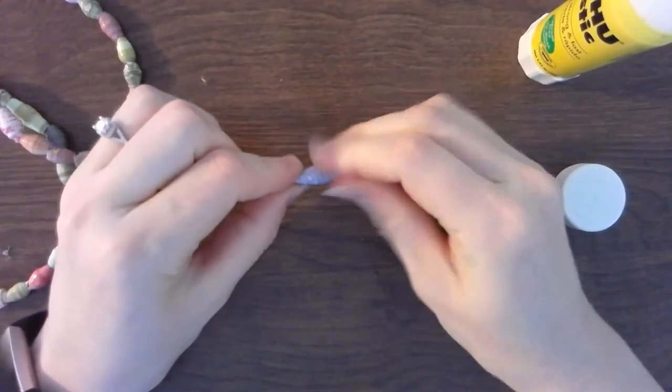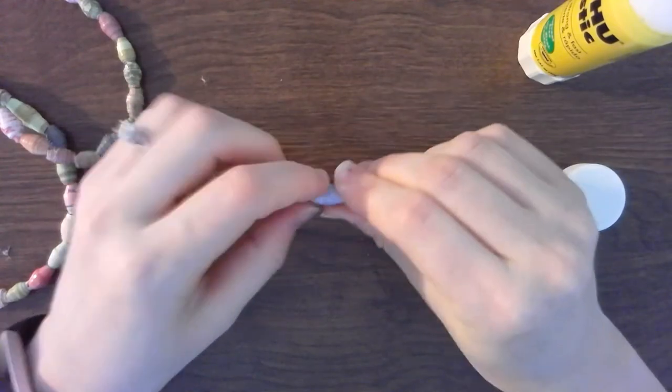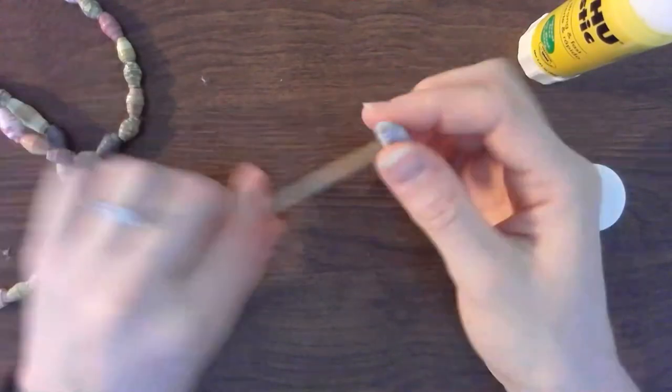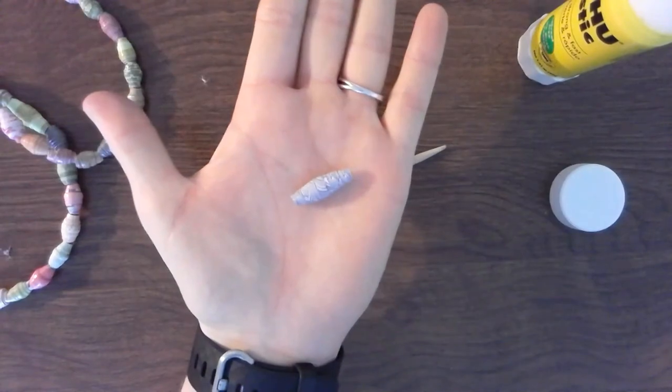When you're all done with your bead, make sure to smooth it out and you can pull it off your stick and you have a beautifully made paper bead.